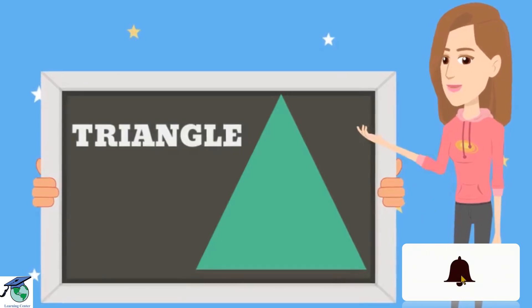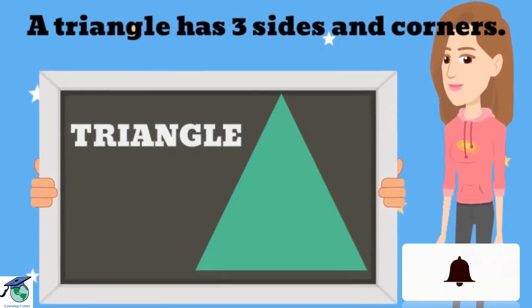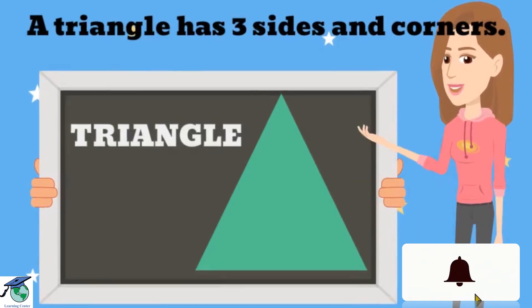This is a triangle. A triangle has 3 sides and corners.